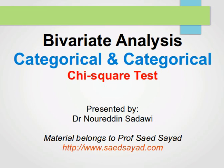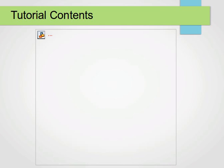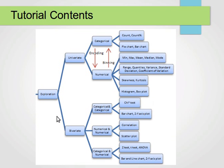Hello again. We continue our explanation of bivariate analysis, and this time we'll be covering categorical and categorical — so when the two variables are of type categorical. Get your pen and paper ready if you're taking notes, because I'll be explaining the chi-square test by giving an example. Let's remind ourselves of where we are: we're doing data exploration, bivariate analysis. We've done numerical and numerical, and now we're covering categorical and categorical.